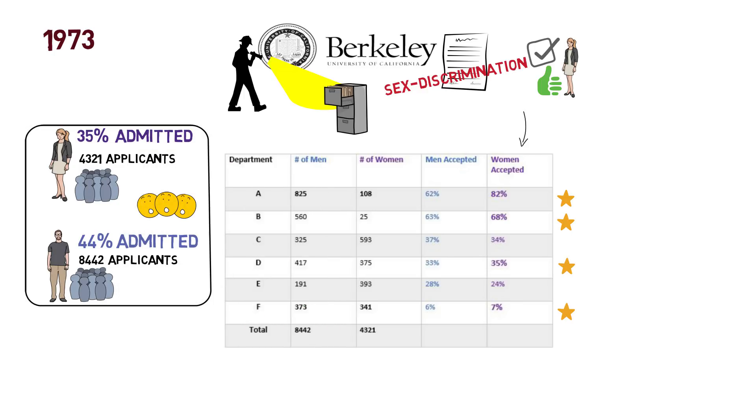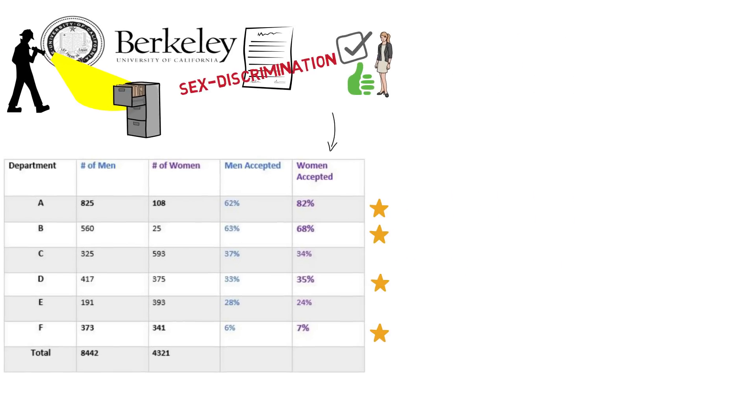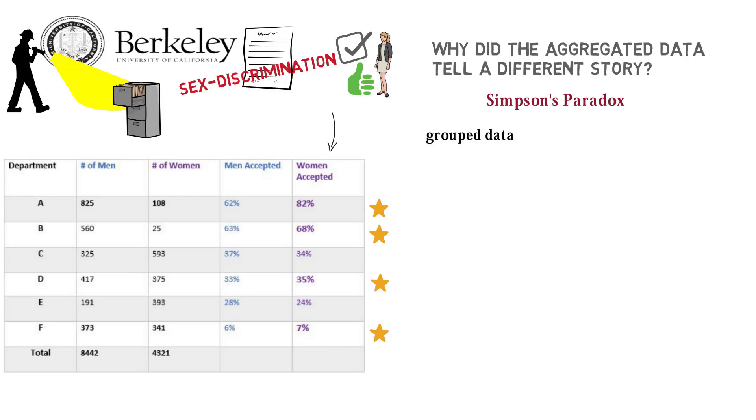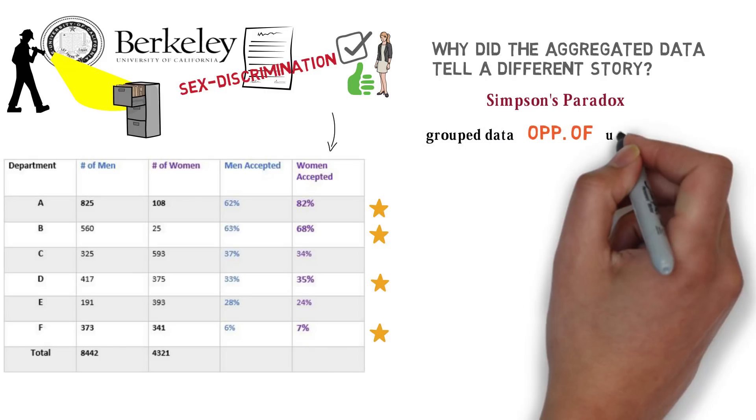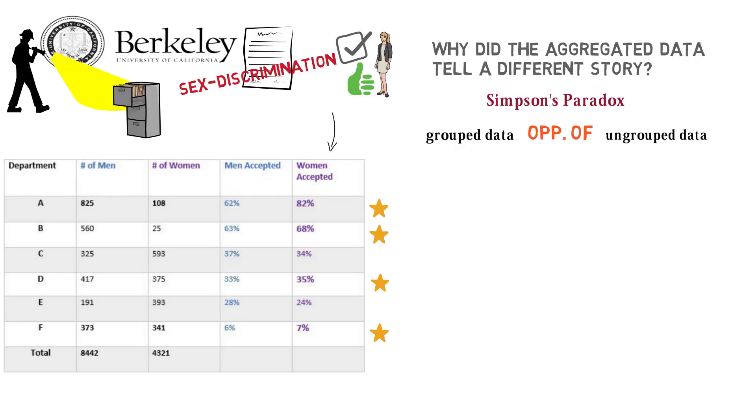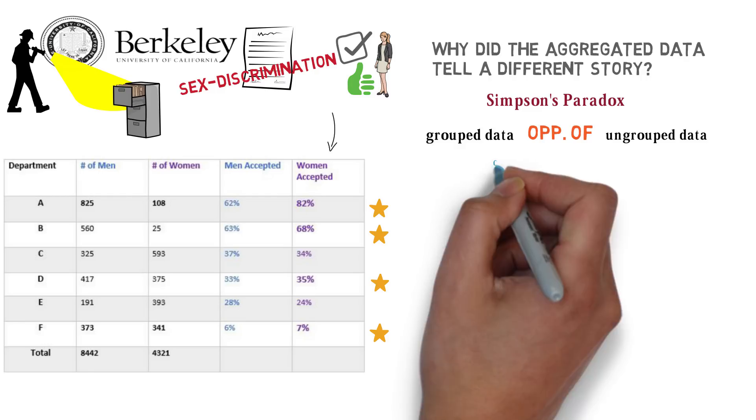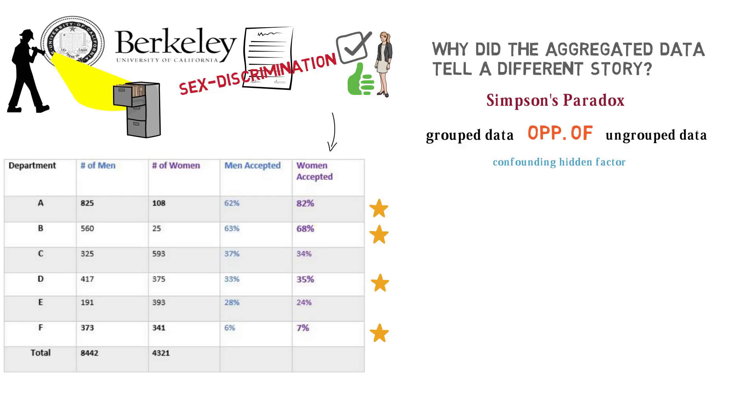This is a classic case of Simpson's Paradox: when grouped up data tells the opposite story of the ungrouped data. This usually happens because of a confounding factor that is hidden from sight within the data.